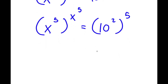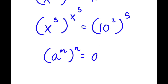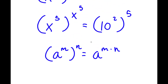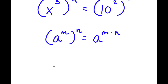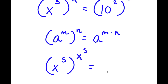Now, remember, if I have something in the form a to the power of m to the power of n, this is equal to a to the power of m times n. So 10 to the power of 2 to the power of 5 is equal to 10 to the power of 2 times 5, which is 10 to the power of 10. So now I have x to the power of 5 to the power of x to the power of 5 is equal to 10 to the power of 10.